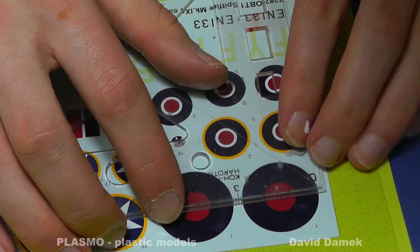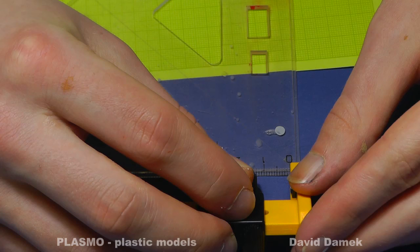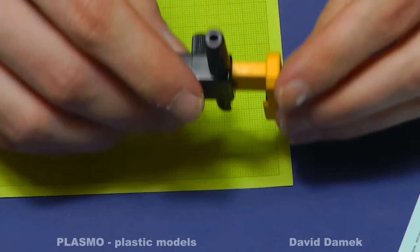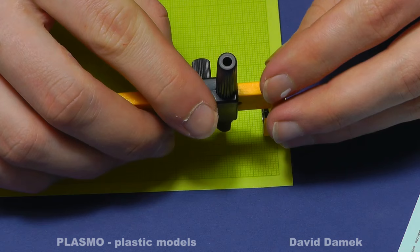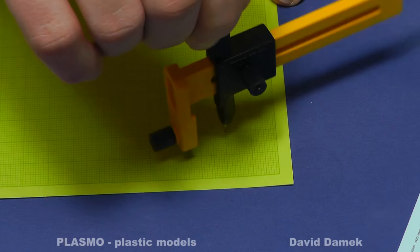I measure the diameter of the circular decal with a ruler and set this value on the compass. Millimeter paper helps me find the center so I can easily turn the compass and cut out such a beautiful circle.